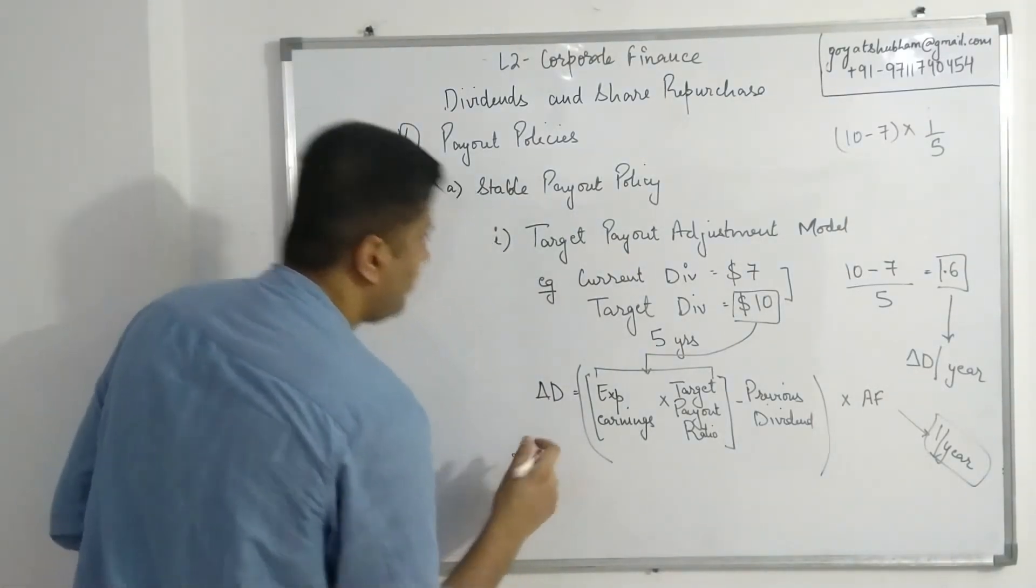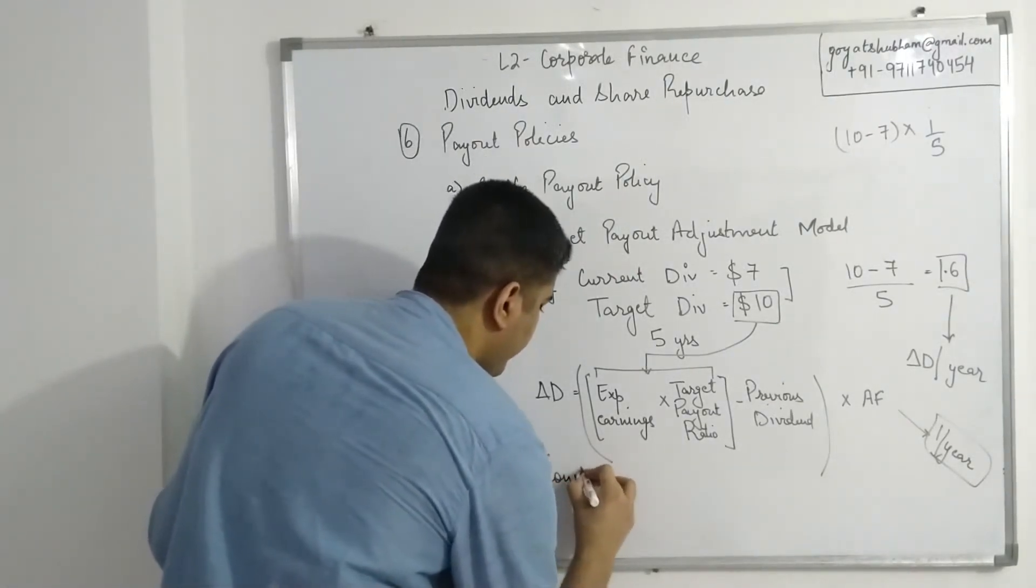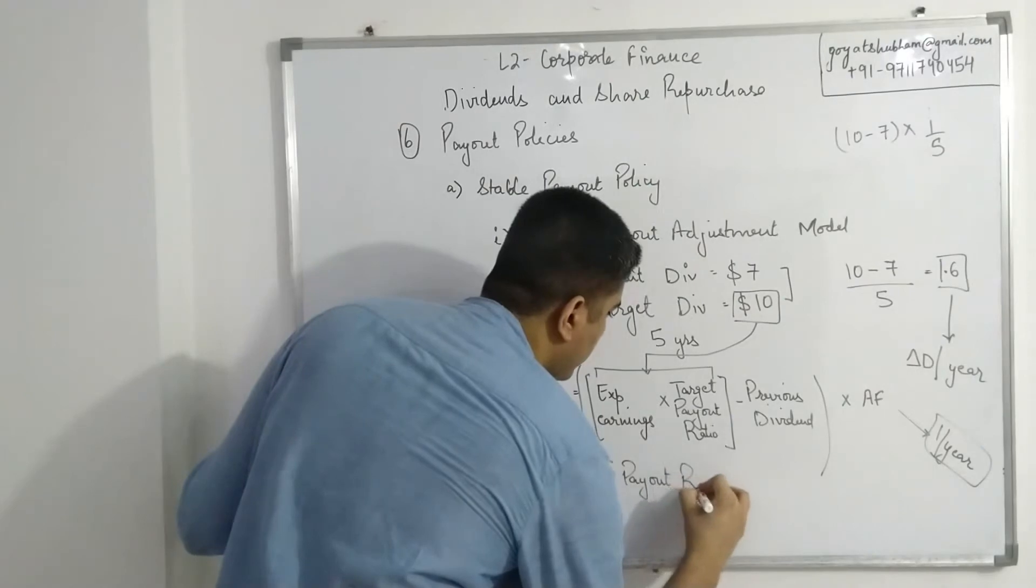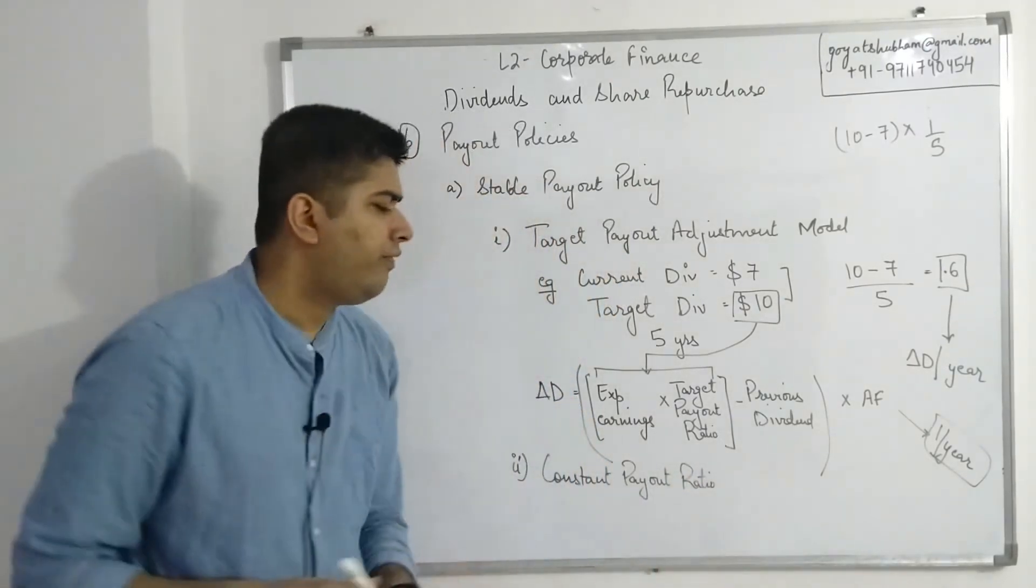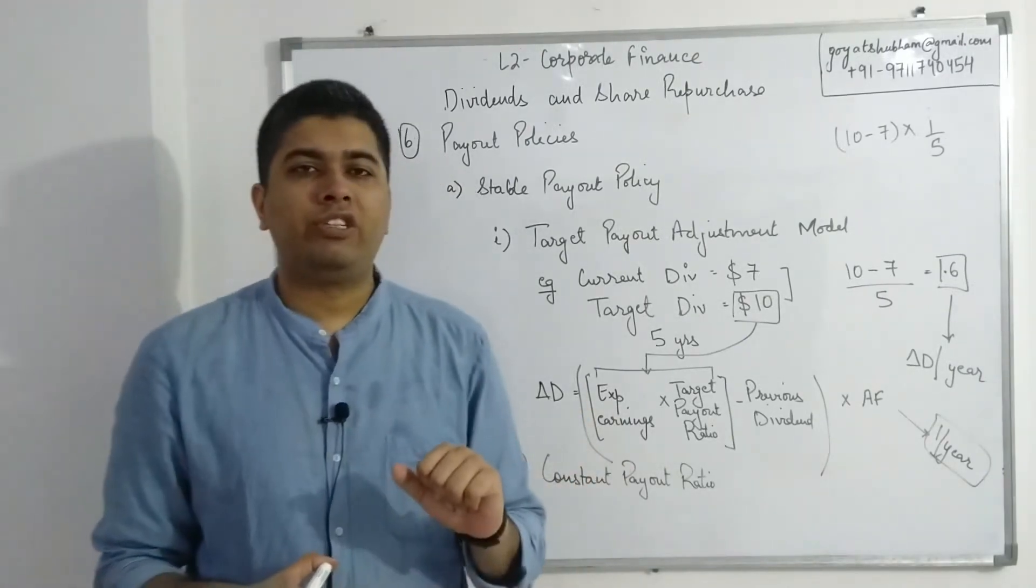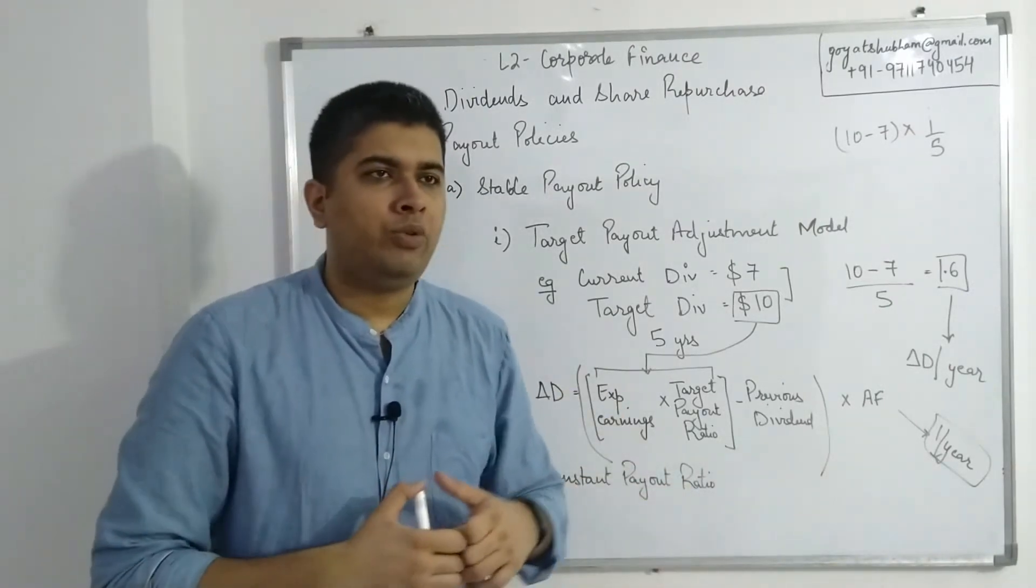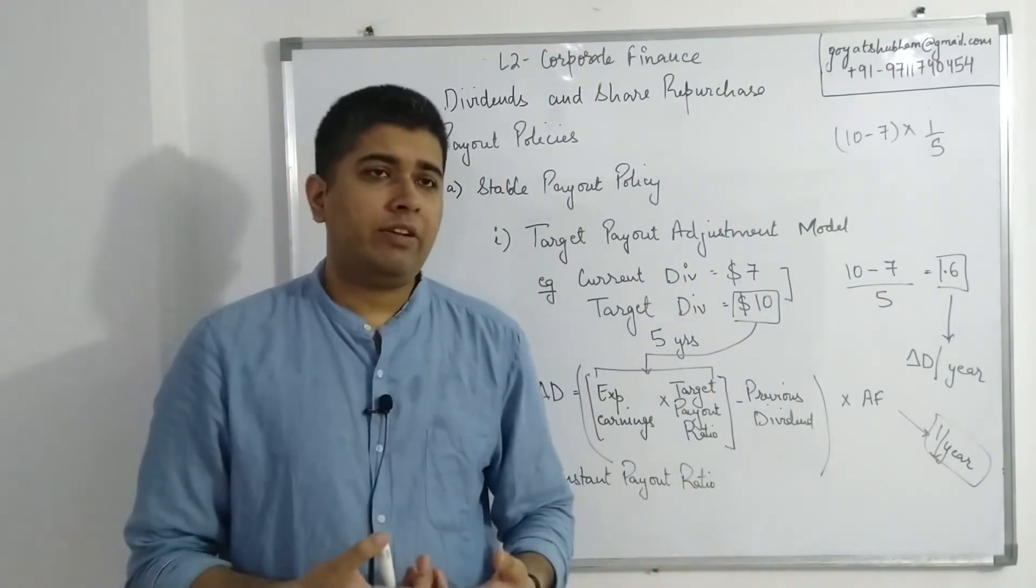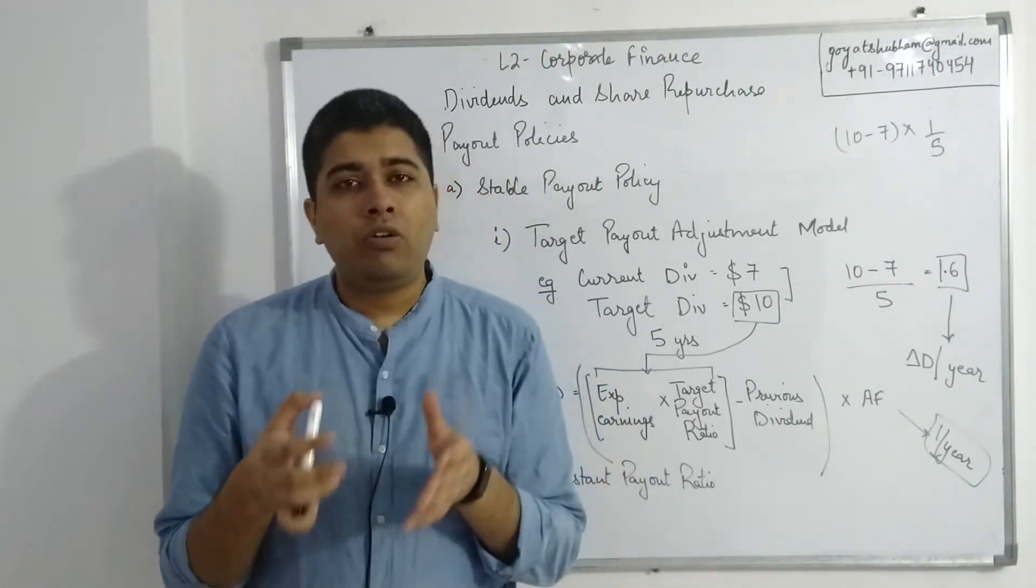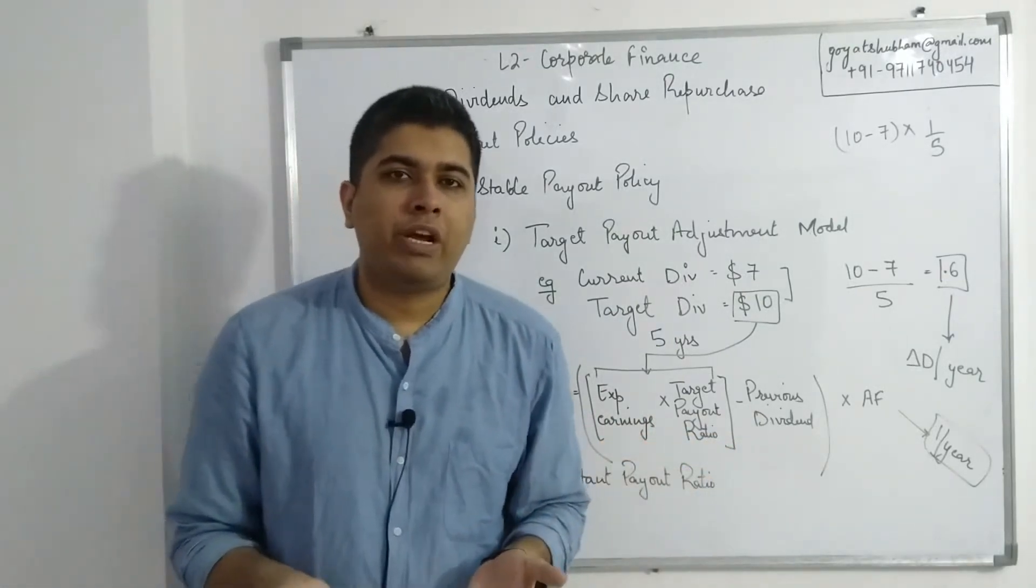The second category of stable payout policy is constant payout ratio. This is fairly straightforward if you understand the term payout ratio. Now companies have some net income every year. Out of that net income, they decide to retain some part in the form of retained earnings, and the remaining part they decide to distribute to the shareholders in the form of dividends. The amount of money as a percentage of net income which is distributed to shareholders is known as payout ratio.